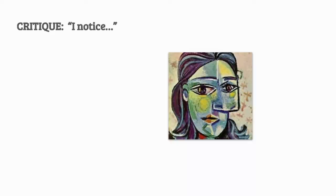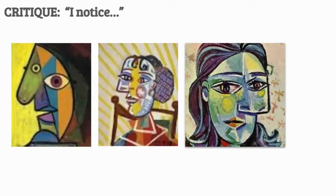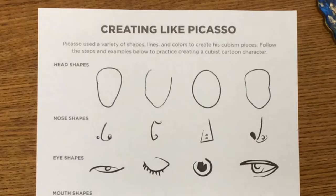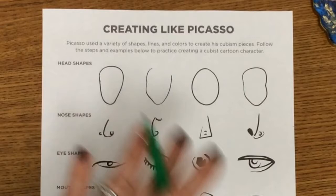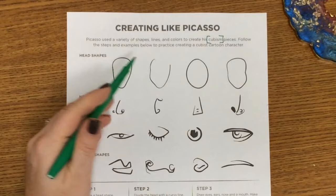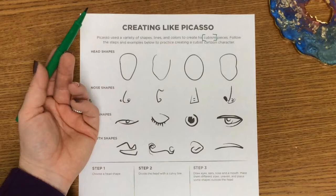Let's take a moment and look at these three portraits and see what you notice and what we can take away after reading the book and learning a little bit more about Pablo Picasso. Now that we know a little bit more about Picasso and his cubism movement, let's look at this worksheet and warm up our idea of how we're going to create a Pablo Picasso piece. It says Picasso used a variety of shapes, lines, and colors to create his cubism pieces.